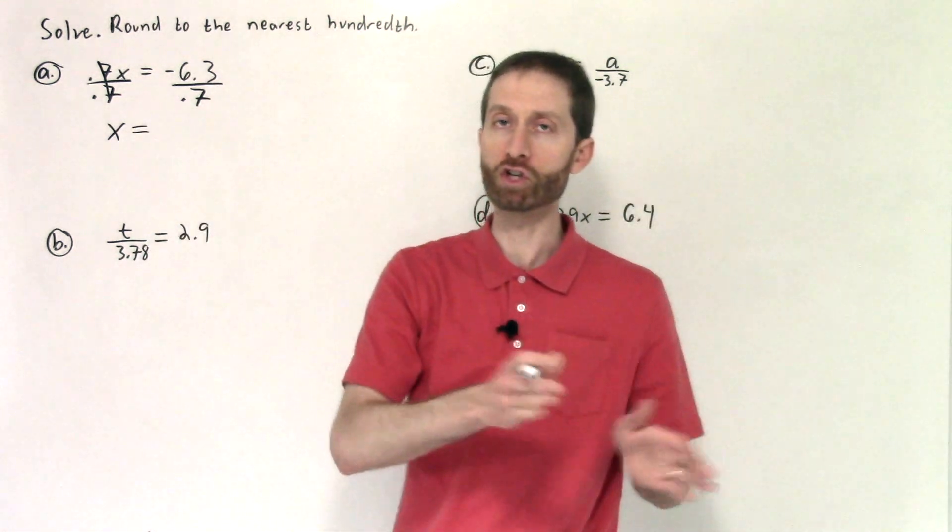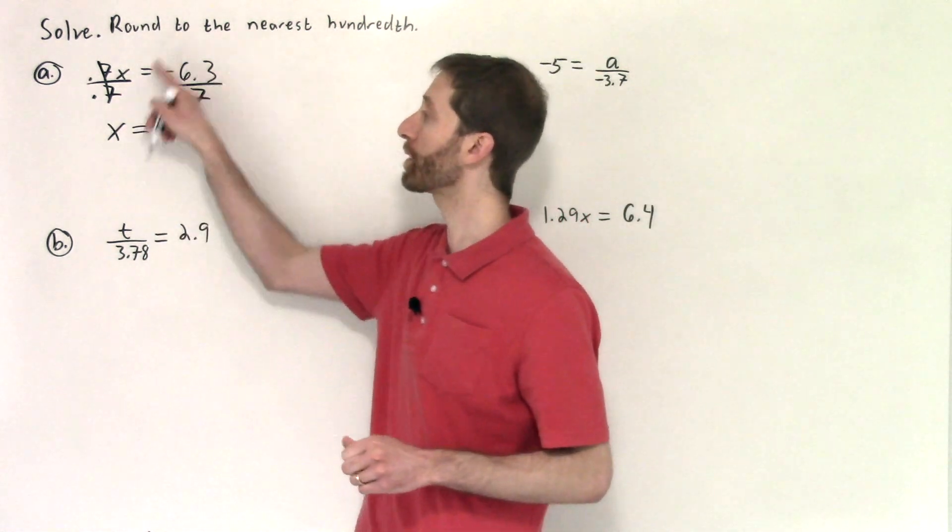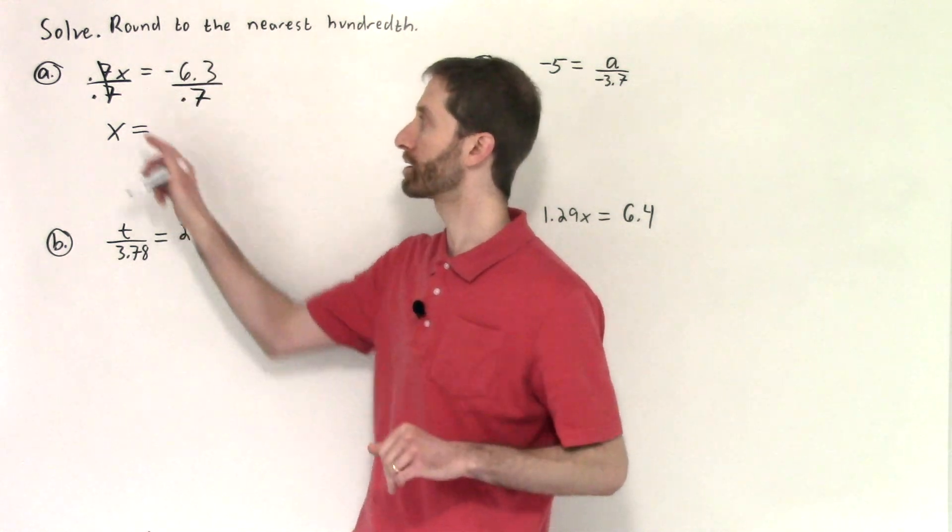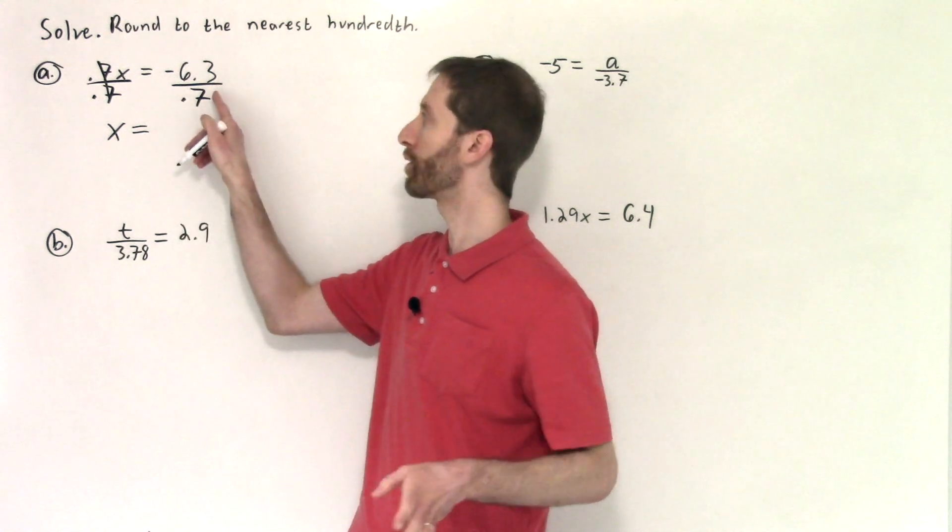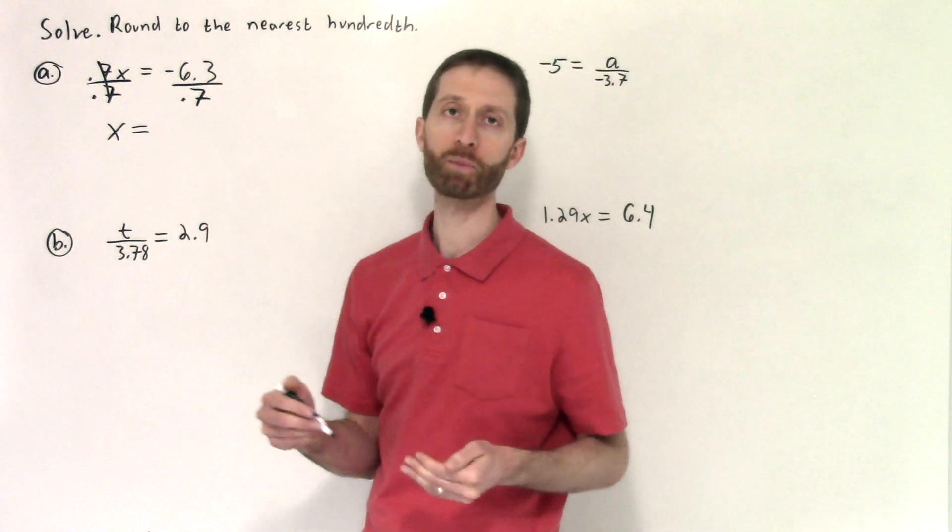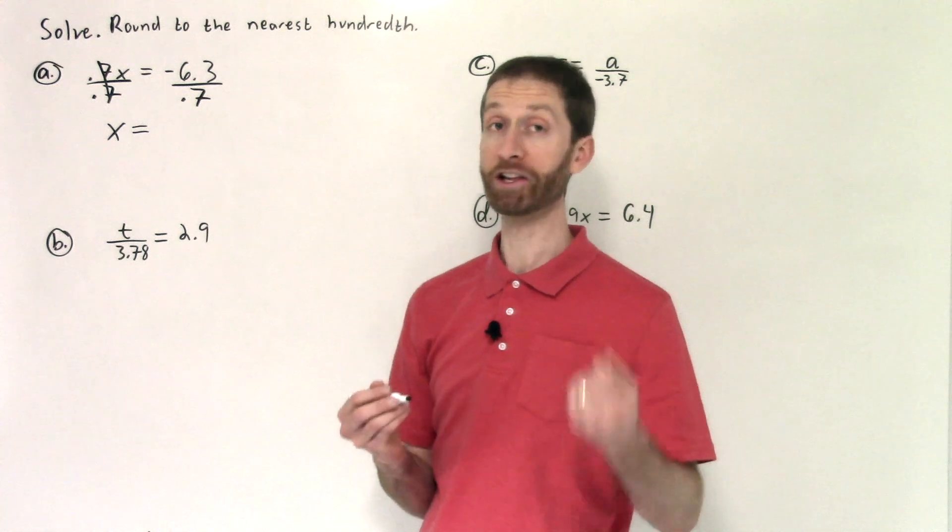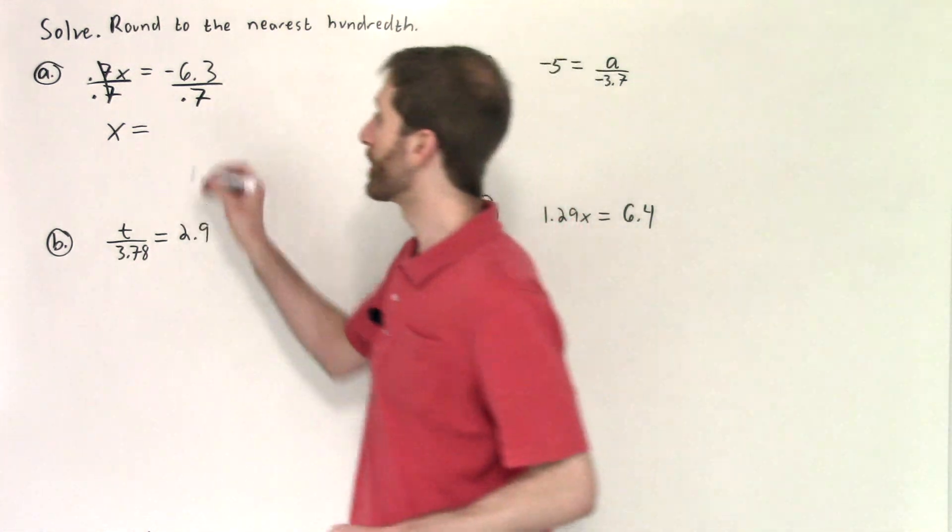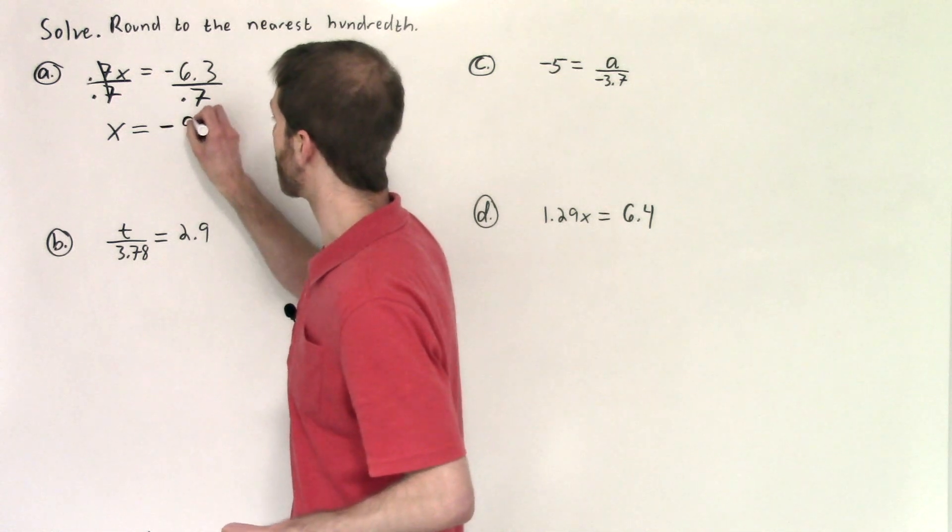Now our focus shifts to this side. A lot of people get scared off by that and then they kind of freeze. Keep your objective in mind. It's to isolate x. We've done that. And then focus on the result. Negative 6.3 divided by 0.7. A little bit of mental math is actually like doing 63 divided by 7, and it's negative. So negative 9.